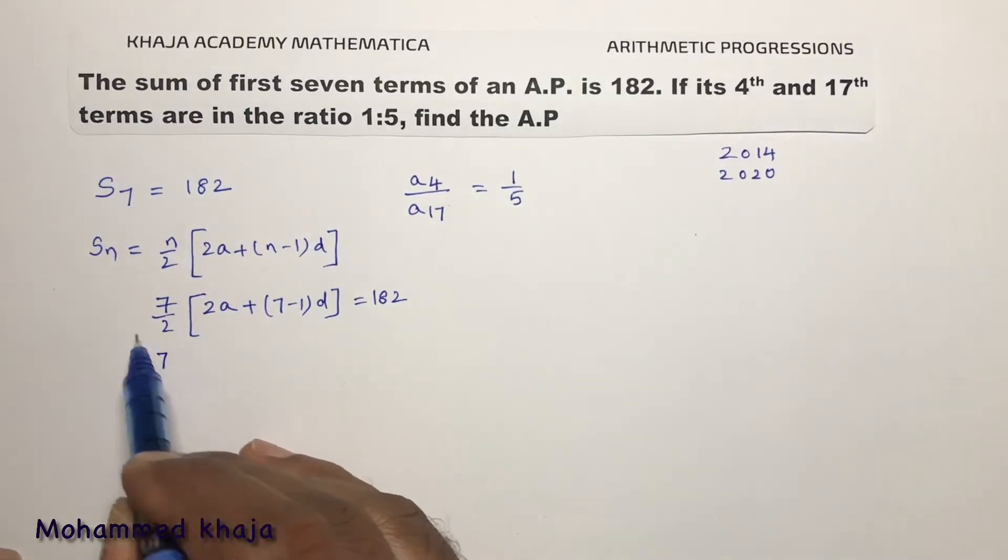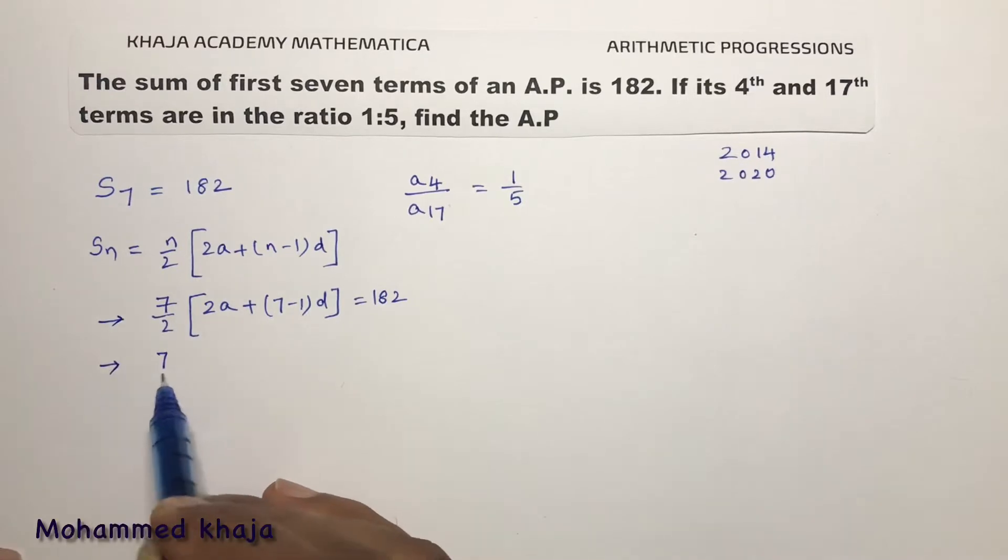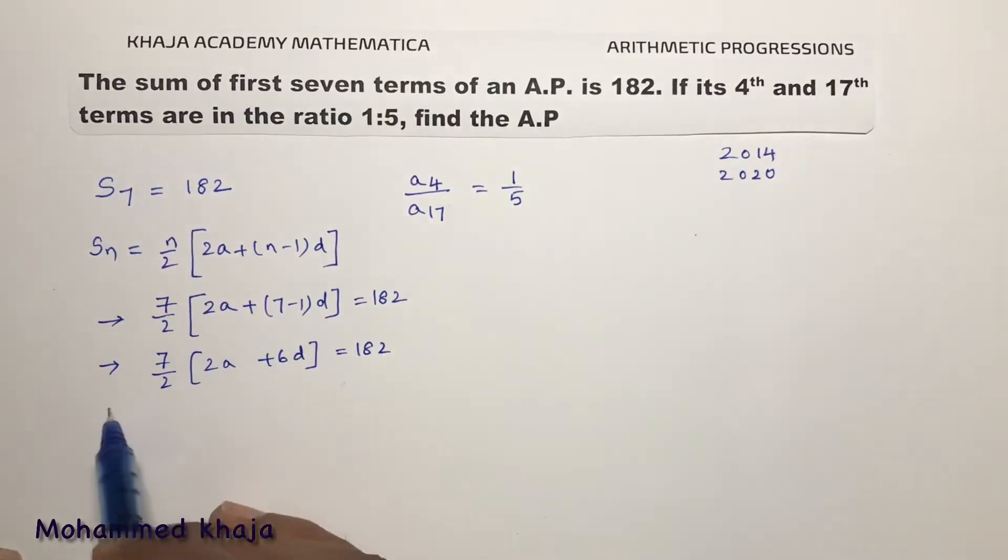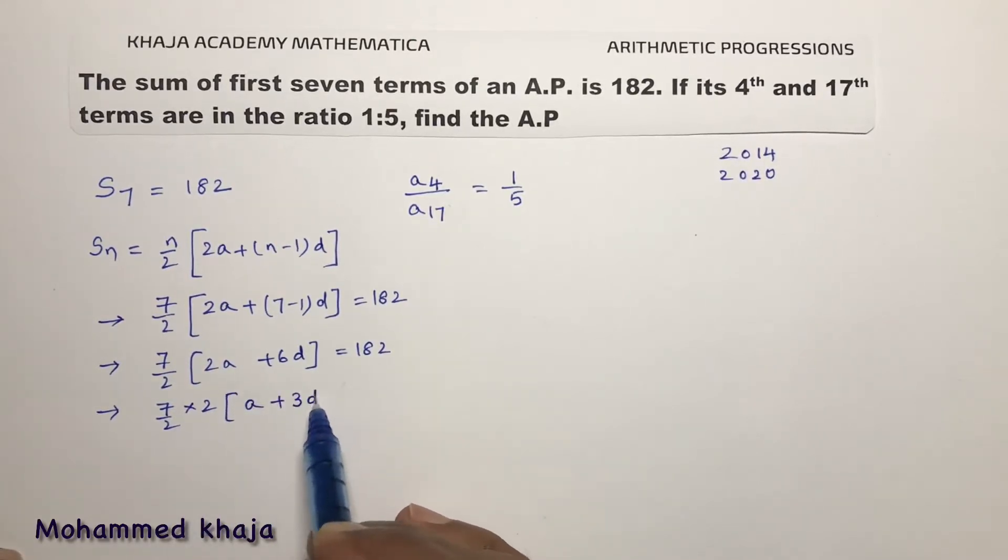So here 7 by 2 into 2A plus 6D equals 182. If you take 2 common from 2A and 6D you will be left with A plus 3D. Now here 2 and 2 cancel. If you transpose this 7 towards right side, A plus 3D equals 182 by 7.